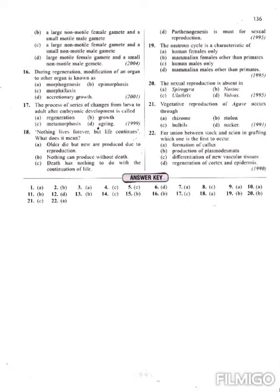Question 22: for union between the stock and scion in grafting, which one is the first to occur? The answer is formation of callus. Callus means a group of undifferentiated cells that have the ability to convert into any type of cell. This tendency of the cell is known as totipotency. So we have discussed 22 questions here.